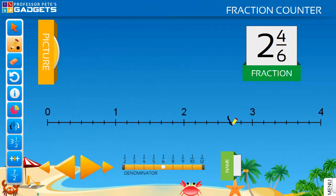Hide the picture, fraction, name and fractions on the line, as well as the marker, and have your students mark on the number line where they think the mixed number shown lies.